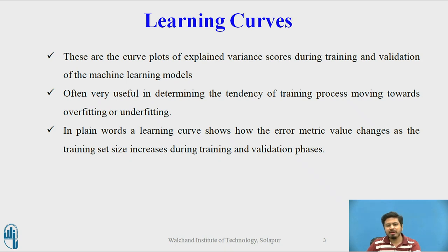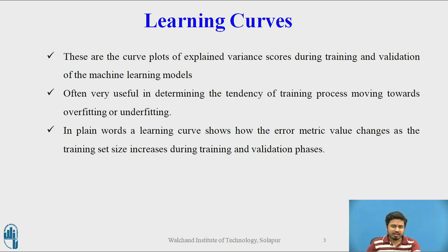When we talk about explained variance, we talk about the expected measurement of variance in our ML model. There are two curve plots — one during the training phase and another during the validation phase of the machine learning model.